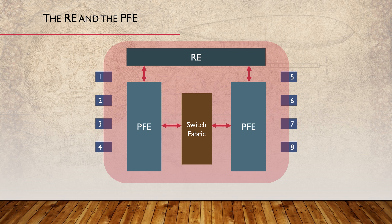Modern routers have advanced this concept of control plane and data plane split considerably. It improves performance, but sometimes it can blur the lines between the two planes. The RE is generally responsible for handling exception traffic — that is, traffic sent to or from the router. Traffic would arrive at an ingress interface, flow through the PFE, and up to the RE. The RE would process the traffic. If it needs to respond, it will send the traffic back to the PFE, which will forward it out the egress interface.